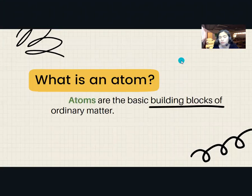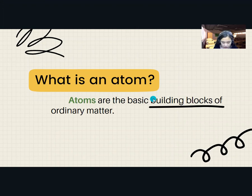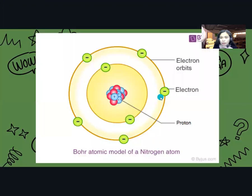So first, what is an atom? Atoms are the basic building blocks of ordinary matter. Atoms can join together to form molecules, which in turn form most of the objects around you. And this is the Bohr's atomic model of a nitrogen atom.